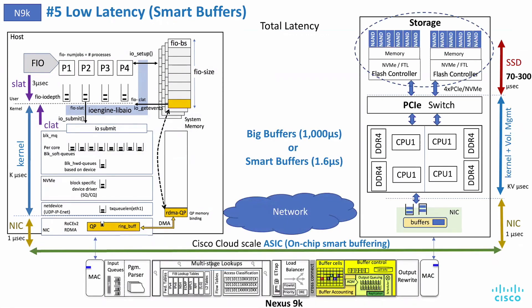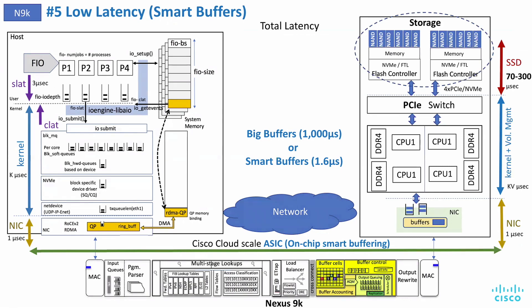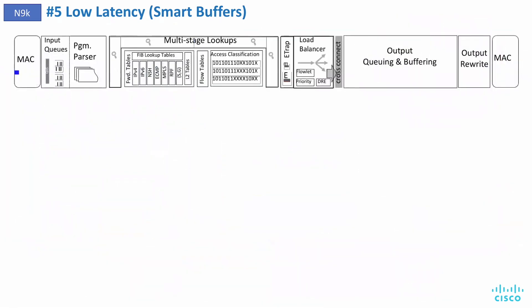Should you go on the IP network when doing NVMe TCP or RoCE with big buffers, small buffers, or smart buffers? If you go with big buffers, you can see over a millisecond of latency, so your latency is going to go very high. You want to do on-chip smart buffering instead.